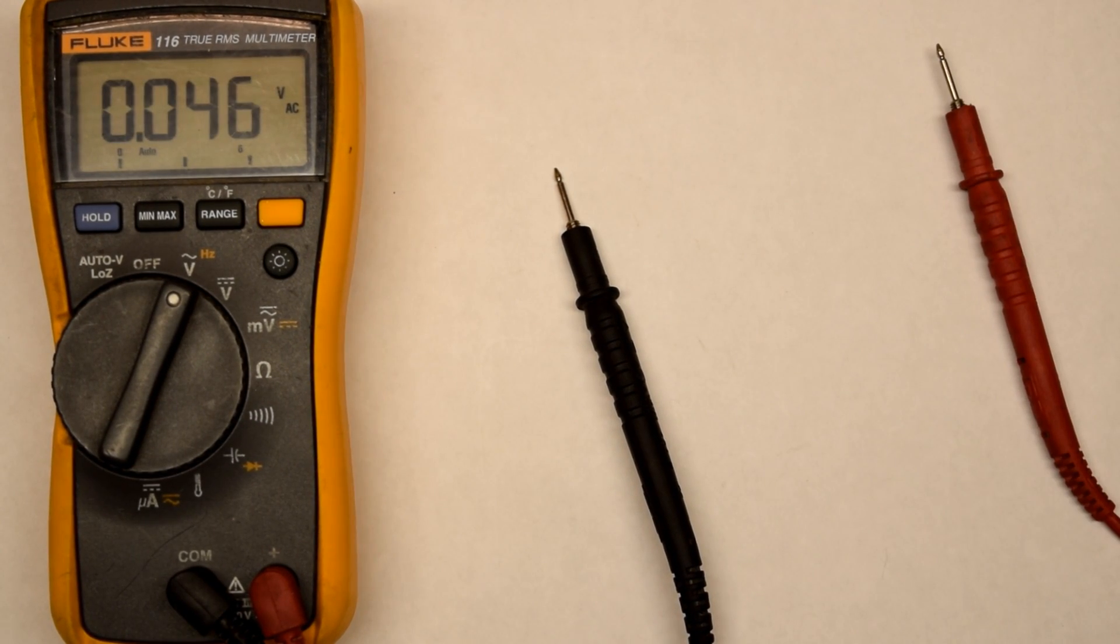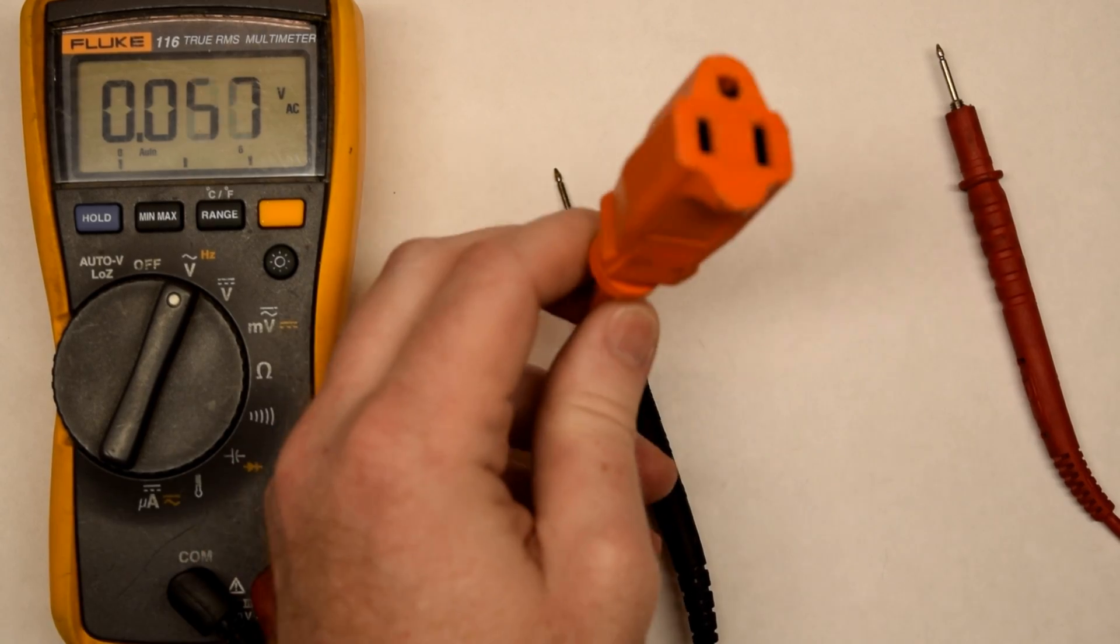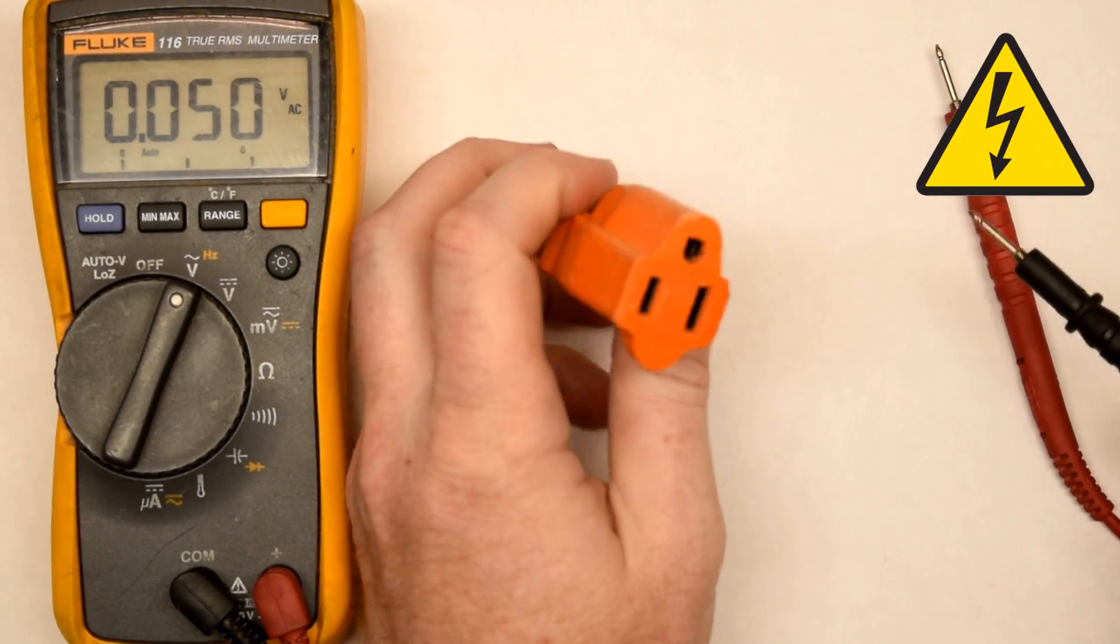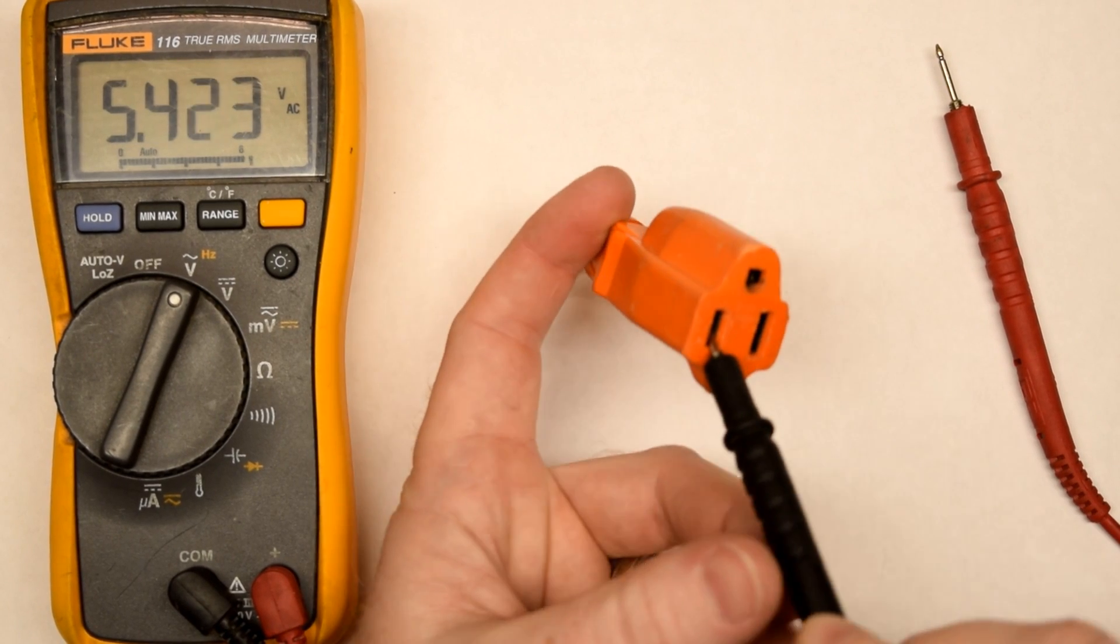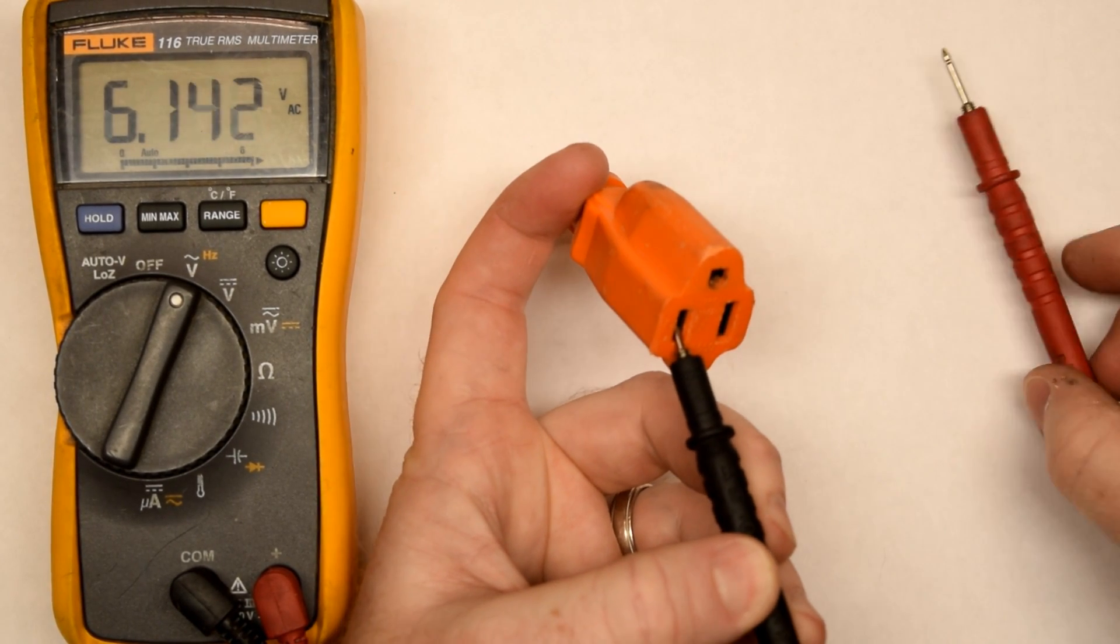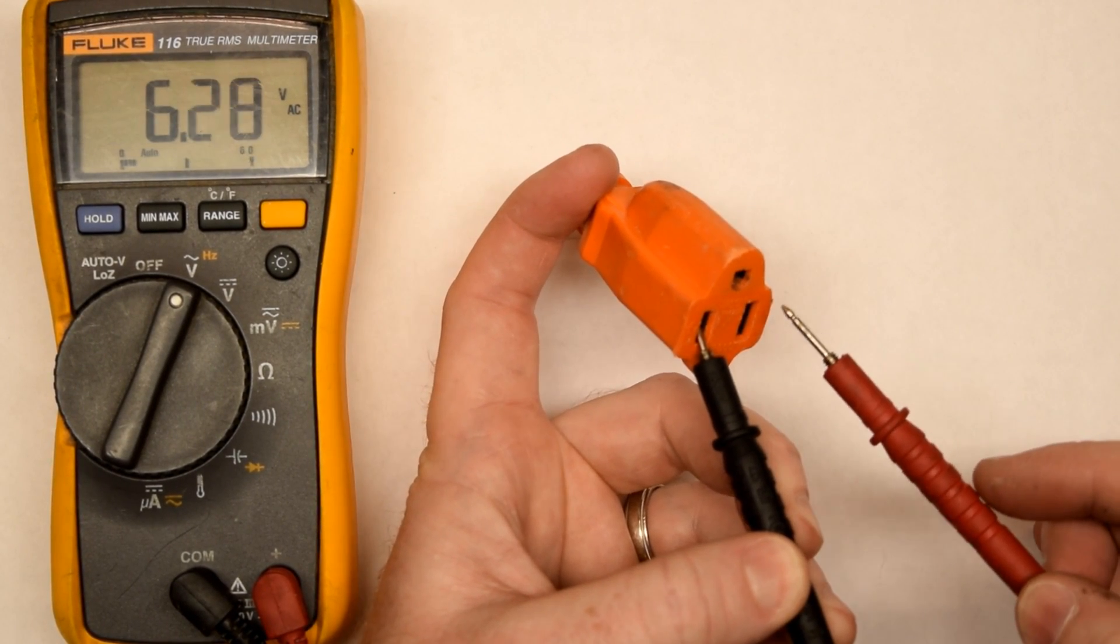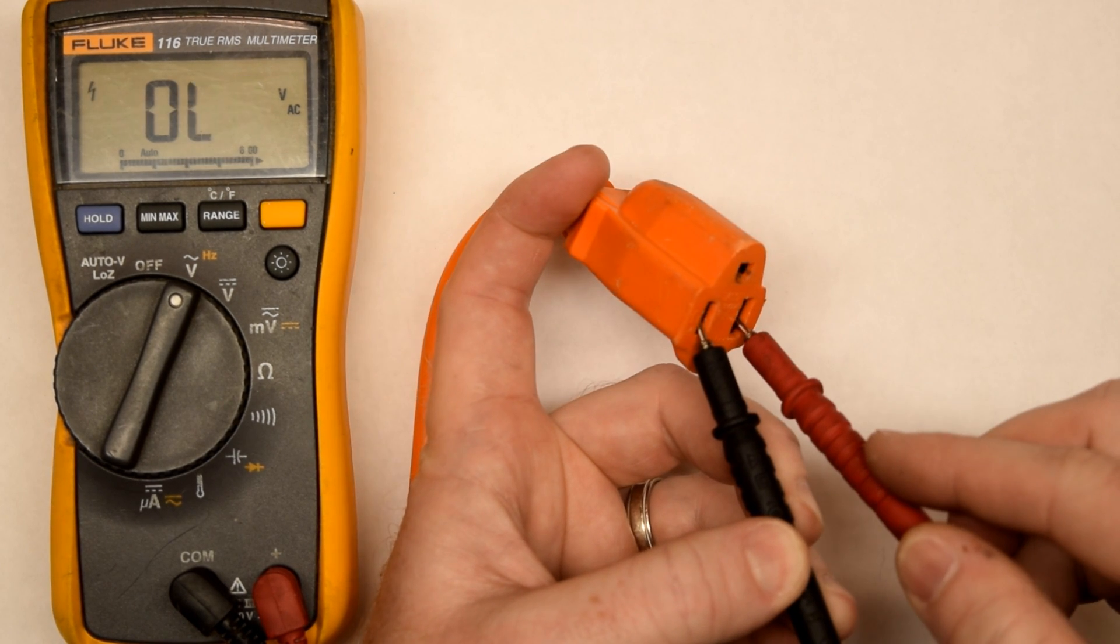Now we're going to test alternating current, so wall plugs. Again, use caution. Don't touch the metal pieces. Insert one lead into one side of the plug and then the other into the other side.